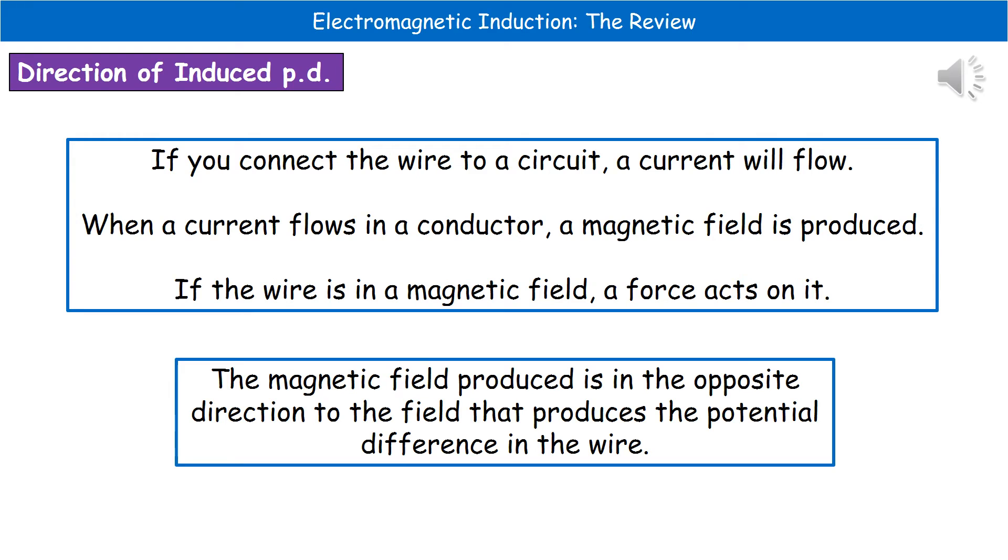Now, once we've actually induced this potential difference, if that wire is connected into a circuit, then that's going to make a current flow.